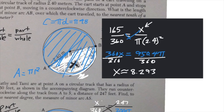The directions say to round to the nearest tenth, so the area of that sector is approximately 8.3 square meters.